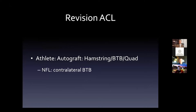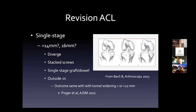For revisions, while we often use allograft, for athletes it's still best to use an autograft that wasn't used before. In the NFL we use contralateral bone-tendon-bone in most revision cases. We also see a trend now toward more single-stage revisions, even for cystic changes or tunnel dilation greater than 14 or 16 millimeters. The divergence of tunnels with independent drilling, stacked screws, and dowels with outside-in techniques can all help - as shown in a recent AJSM paper finding really no difference with tunnel widening on the femoral side.